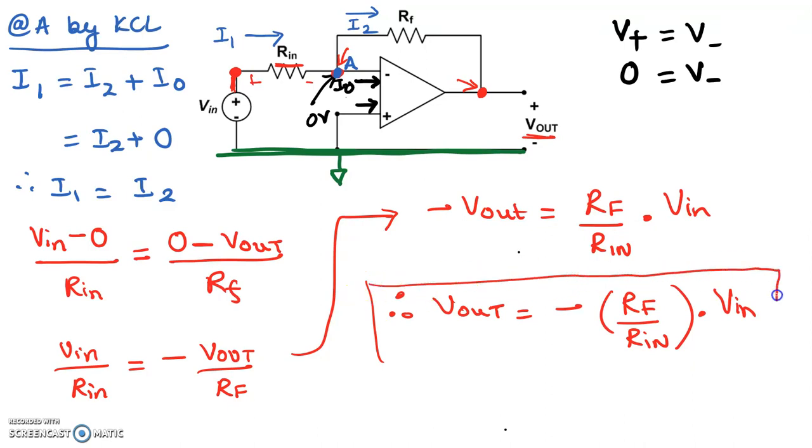This particular expression for the voltage output, in terms of the resistors Rf, Rn, and Vin, if you look at this carefully, we see that Vout is some constant times the voltage value Vin. Now this is the gain. This is the gain.